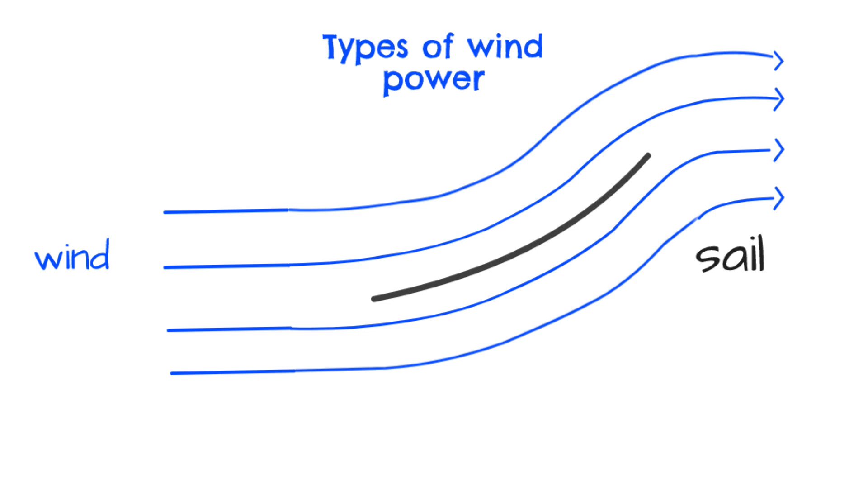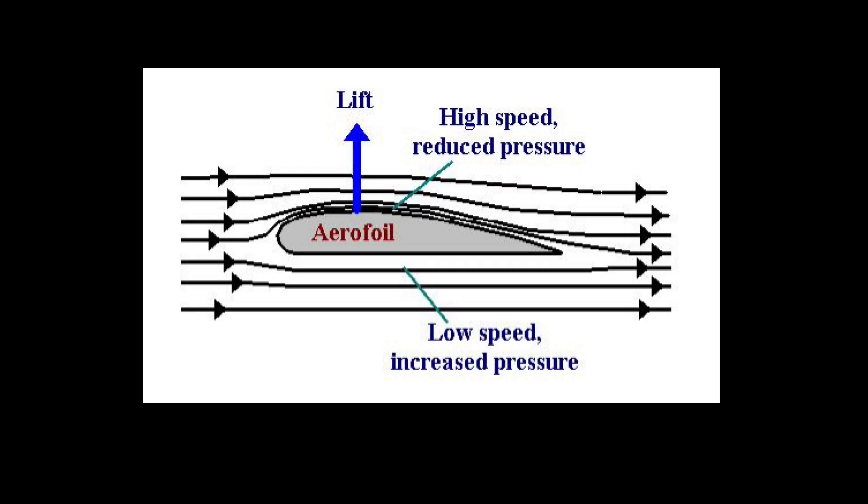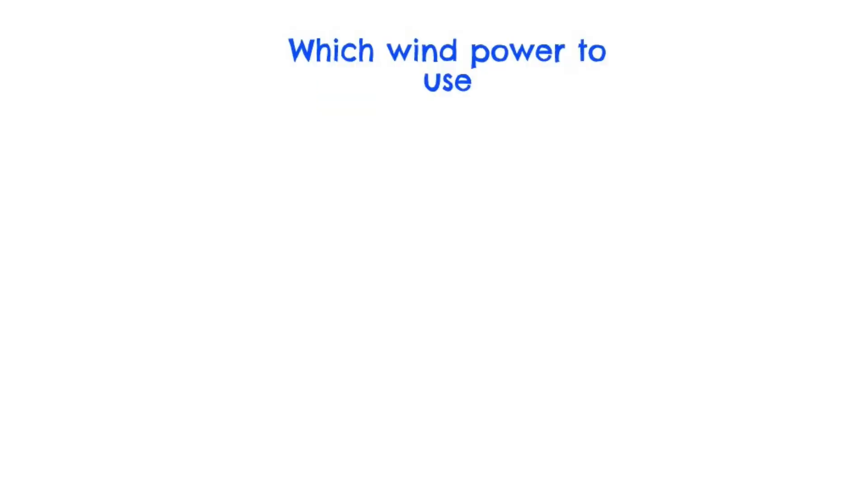And that smooth flow of air by both sides of the sail produces a force termed lift. Lift produced by the smooth flow of air by both sides of a curved sail is the same power as that produced by an airplane wing.